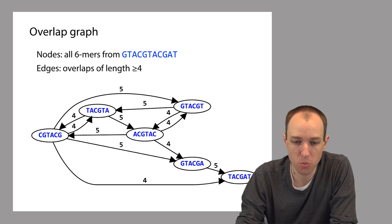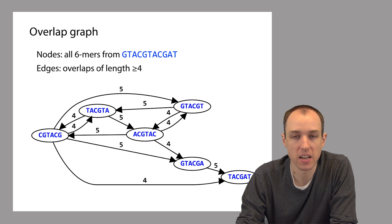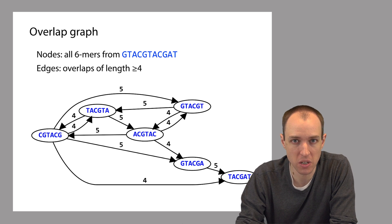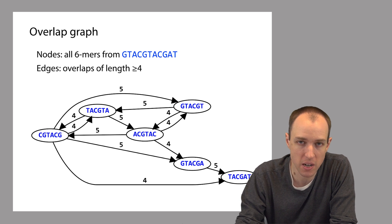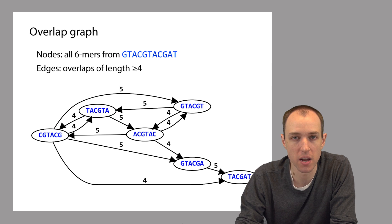Some overlaps are less convincing than others. For example, a length-one overlap — where a length-one suffix of one read matches a length-one prefix of another — could just be a coincidence, so we probably don't want to count that. It makes sense to have a threshold: only count an overlap if it's more convincing than this threshold. In this example, we require the suffix-prefix match to be an exact match and to have length at least four, which reduces the chance of getting a non-convincing overlap.